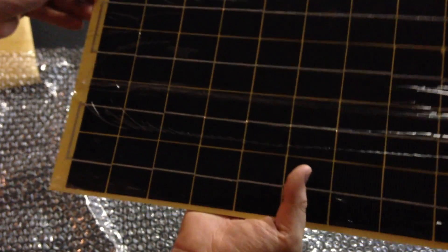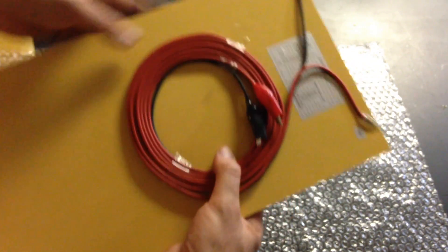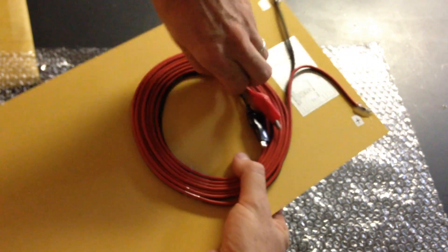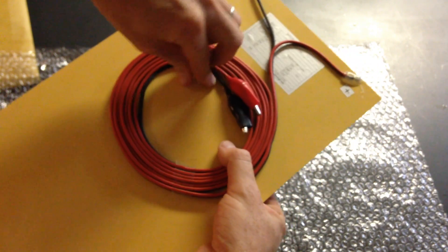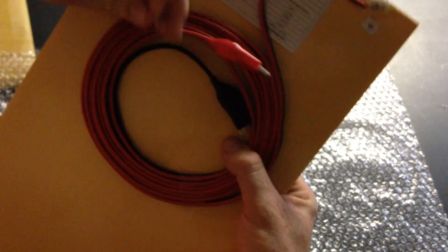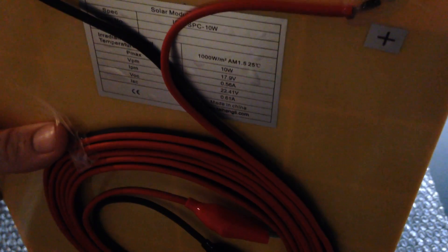You do have this plastic on that you have to take off before using it. They also have tape on. Here you can see the specs of the solar panel: it's 10 watts, 17.9 volts.